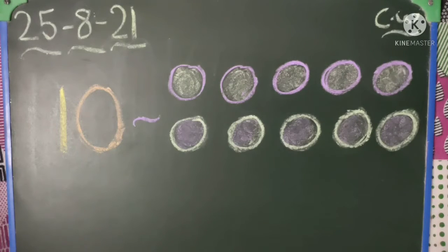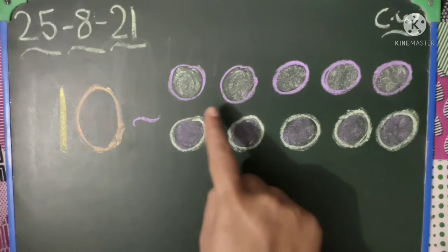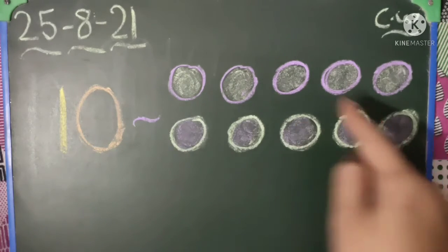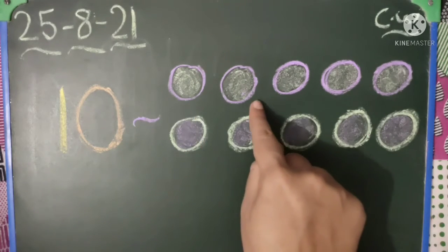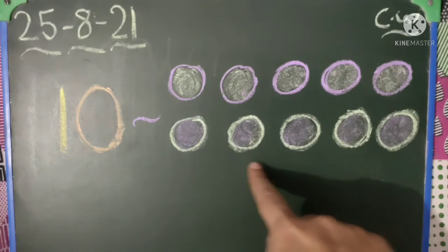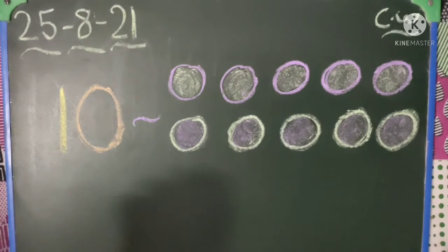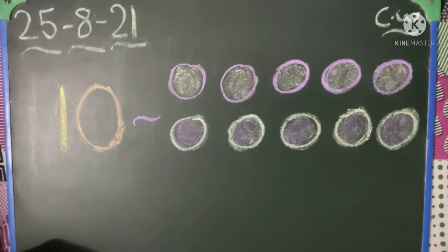Yes my dear friends, the number name of 10 is T-E-N 10, okay. So first we count the circles. I have made 10 circles for you, so first we will count them. 1, 2, 3, 4, 5, 6, 7, 8, 9, 10. Yes, T-E-N 10.